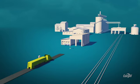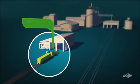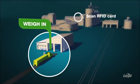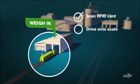You're ready to weigh in. Head over to the inbound scale and stop at the monitor cabinet. Scan your RFID card and wait for the monitor to display a green arrow. You're cleared to drive onto the scale.